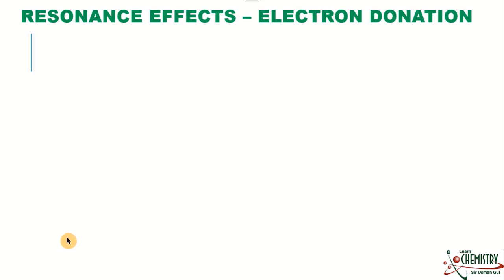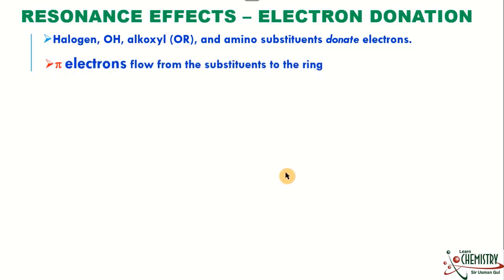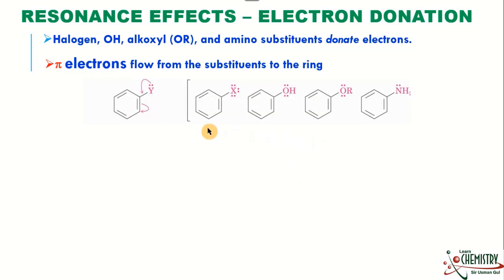Moving toward how the electron donation effect creates positions: this is also a resonance effect. Electron donation is created by halogens, hydroxyl groups, alkoxy groups, or amino substituents that donate electrons. The electron donation occurs by the resonance effect through pi electrons from the substituent to the ring. Every one of these groups contains a lone pair. Because of the lone pair they can easily donate — remember that any atom connected directly with the benzene ring that has a lone pair can donate the lone pair towards the benzene ring, increasing the charge density inside the ring.